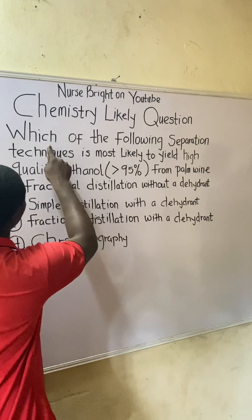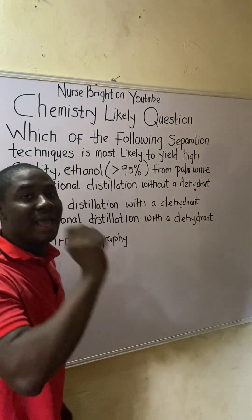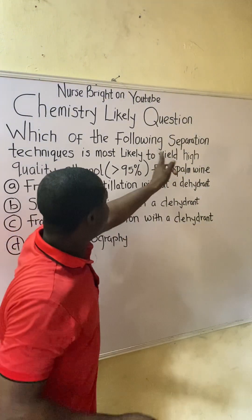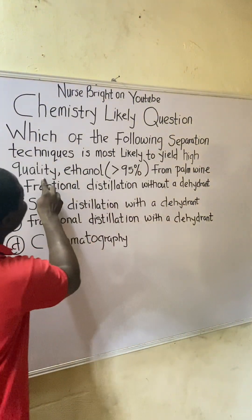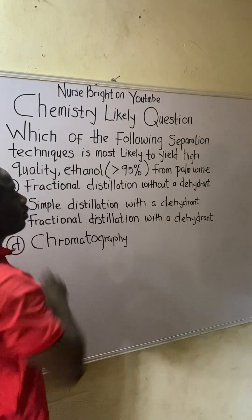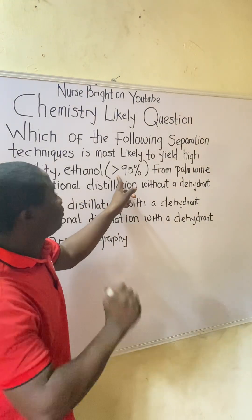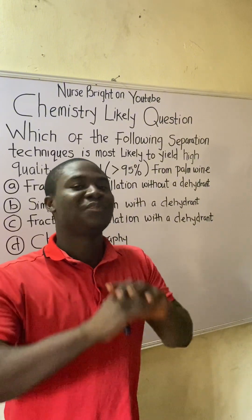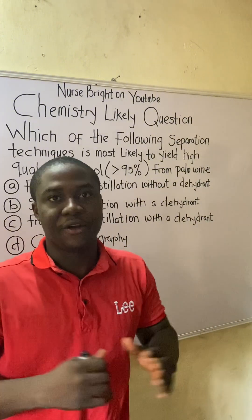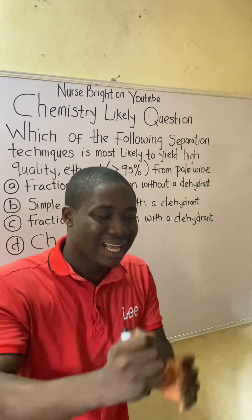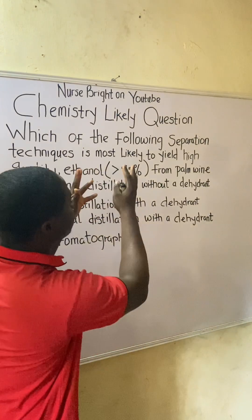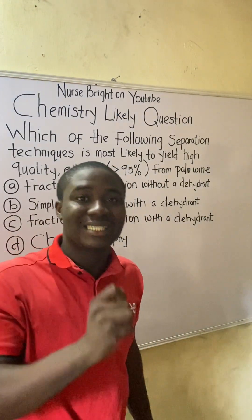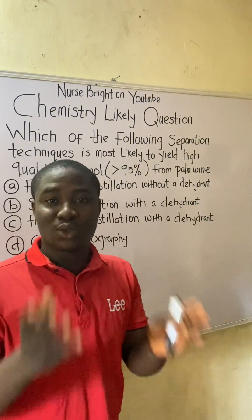The question says: which of the following separation techniques is most likely to yield high-quality ethanol — greater than 95% — from palm wine? We have to understand properly what this question is talking about before we go ahead to analyze the options and find the best answer.